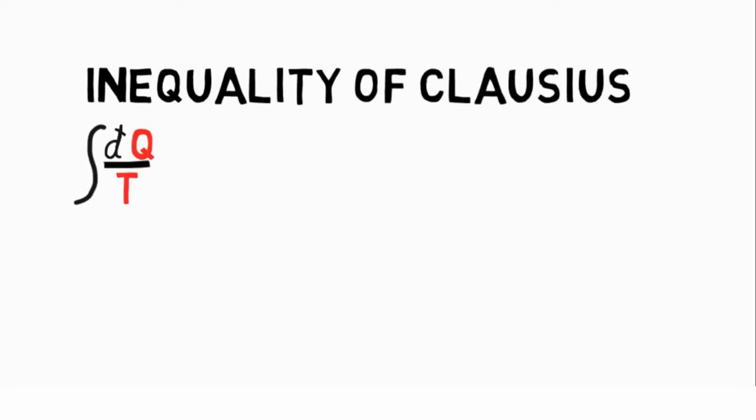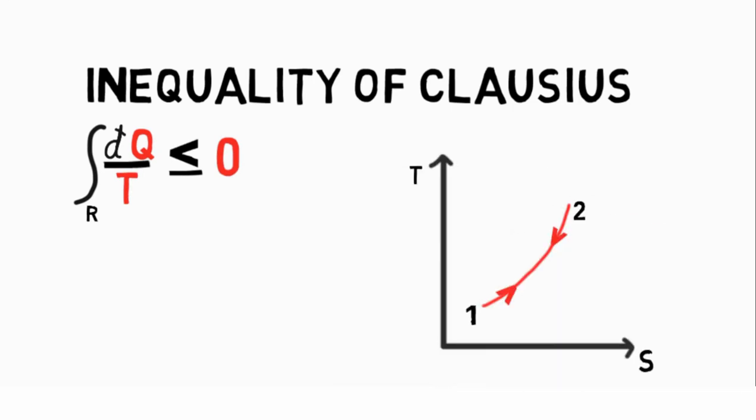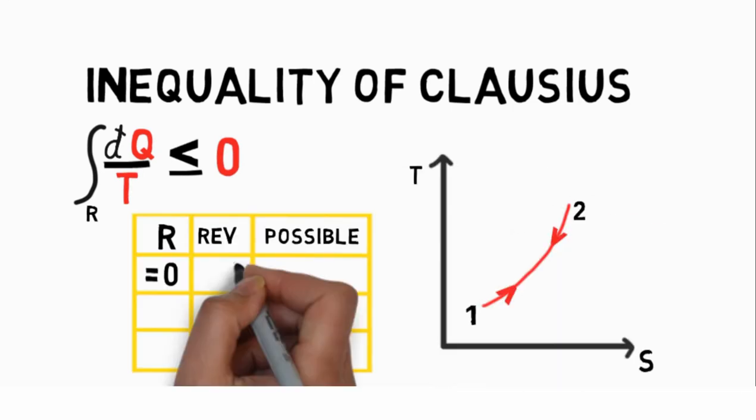The inequality of Clausius provides the criterion for reversibility of the cycle. If R equals zero, the cycle is reversible.